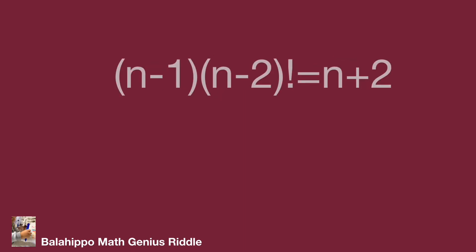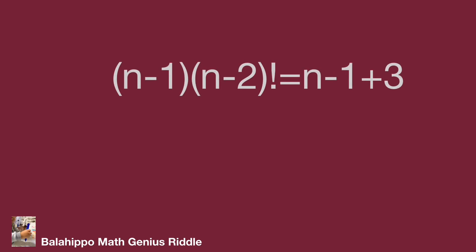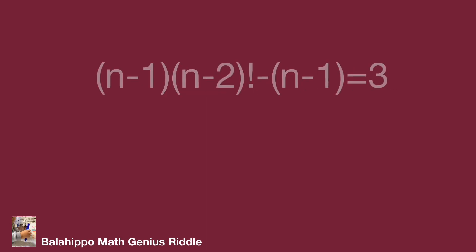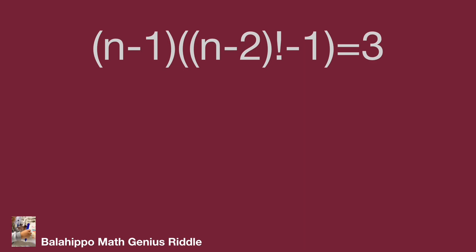Rewrite (n minus 1) factorial as (n minus 1) times (n minus 2) factorial. Dividing both sides by (n minus 1), and adjusting n plus 2 on the right side as (n minus 1) plus 3, the equation becomes: (n minus 1) times [(n minus 2) factorial minus 1] equals 3.